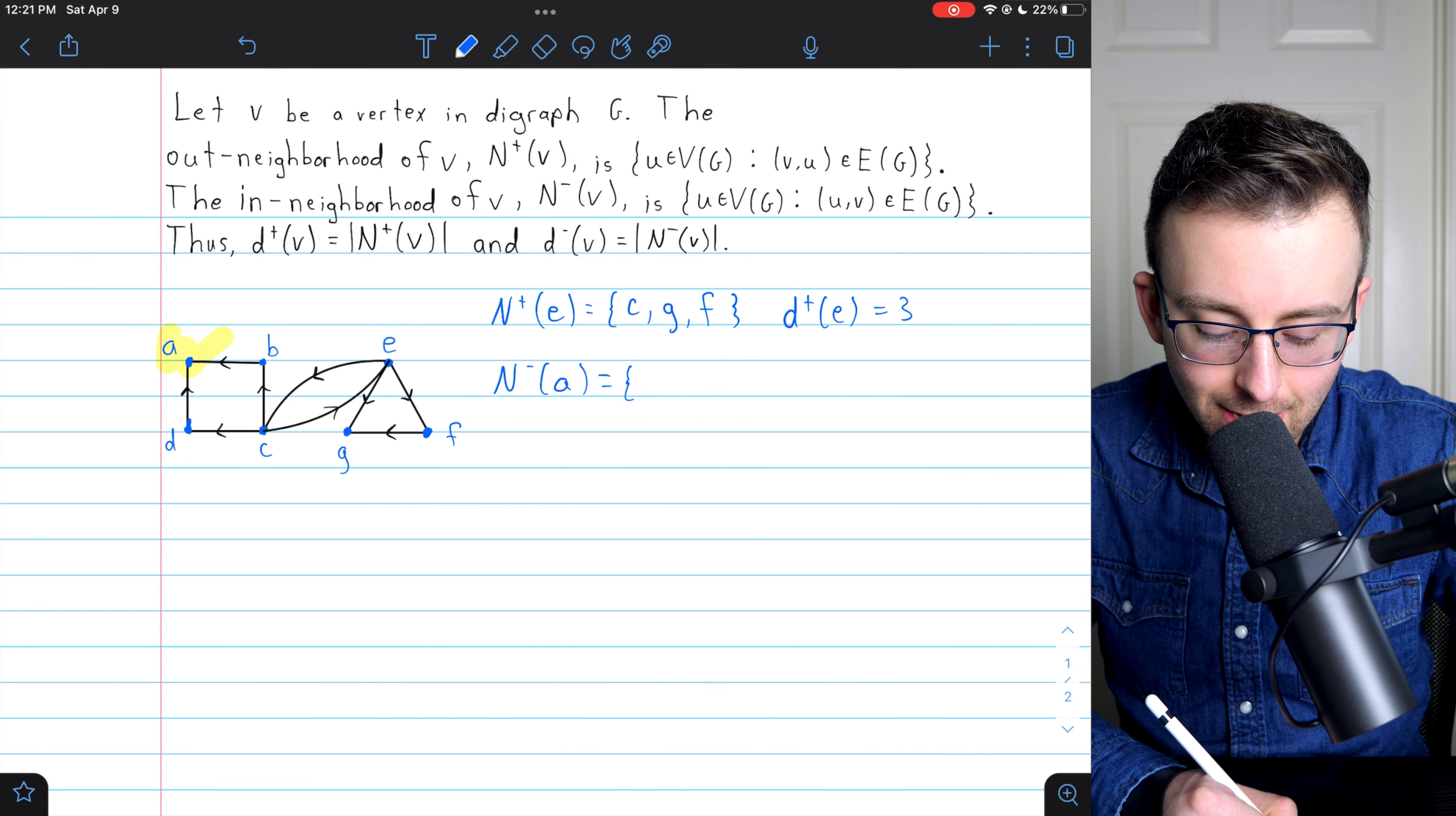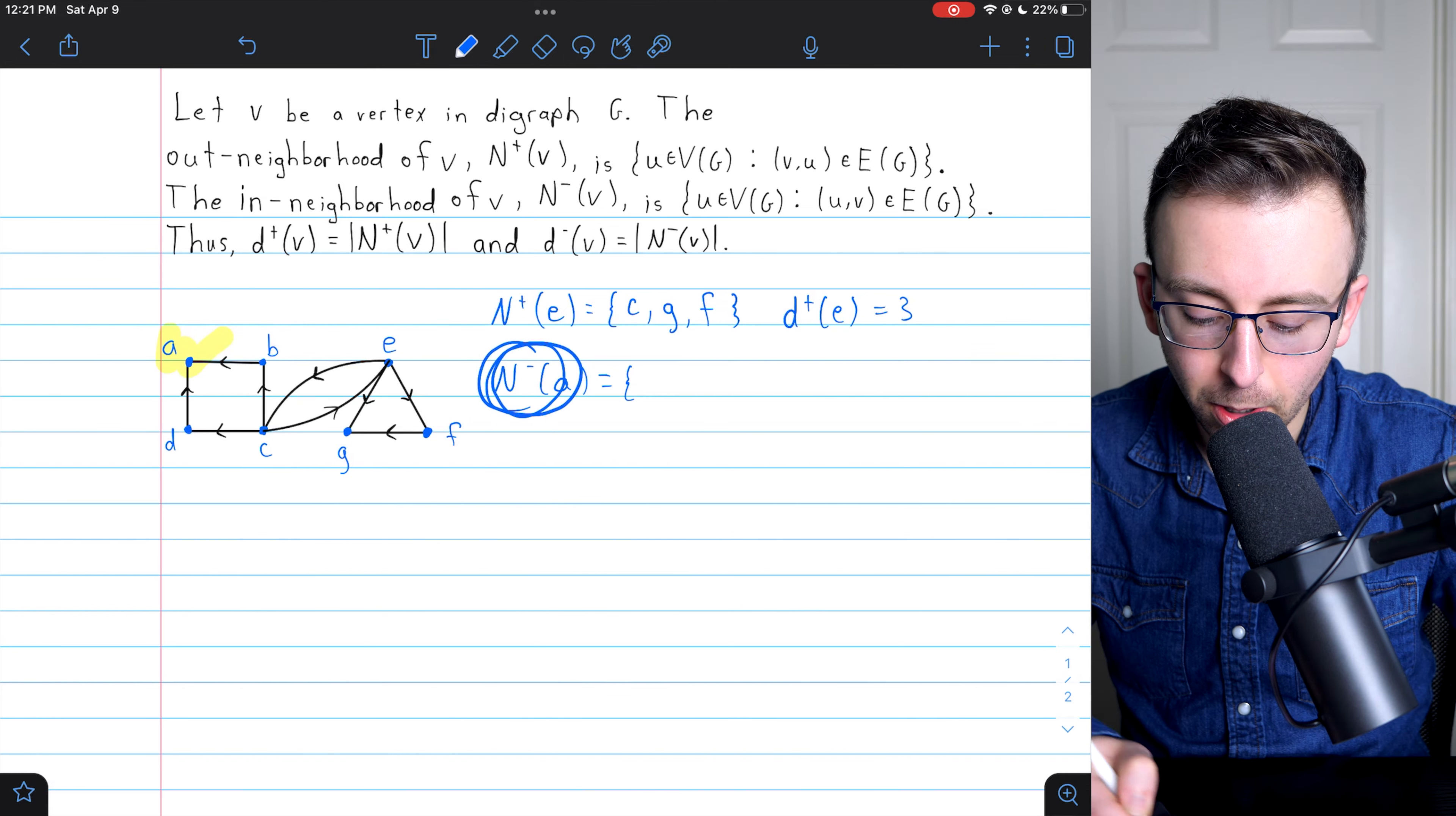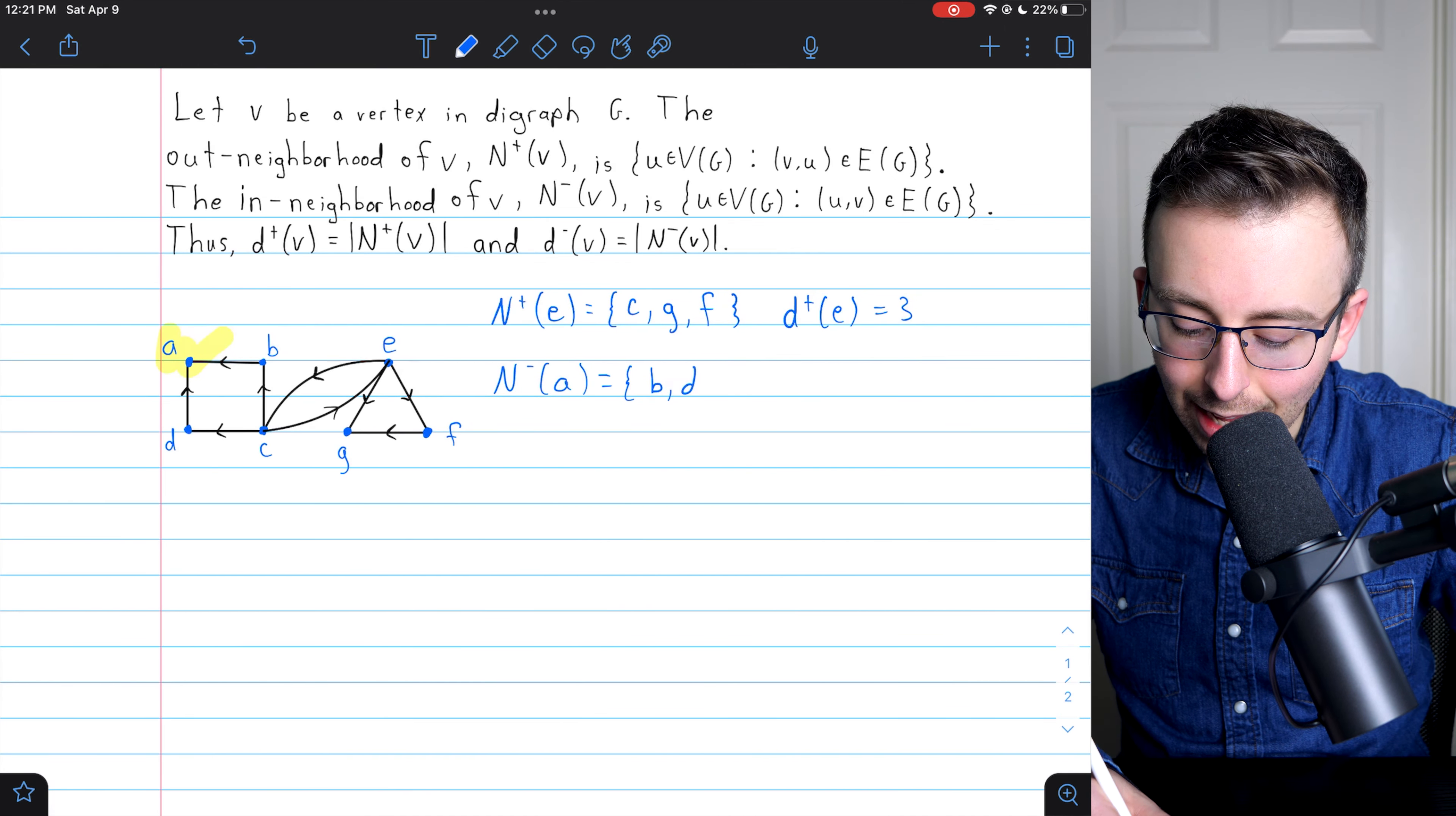That would be D, D is going to A, and B, B is going to, or is adjacent to A. And so the in-neighborhood of A, the vertices going into A, just contains B and D.